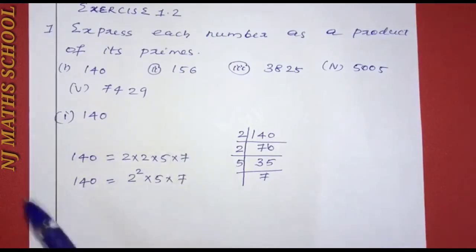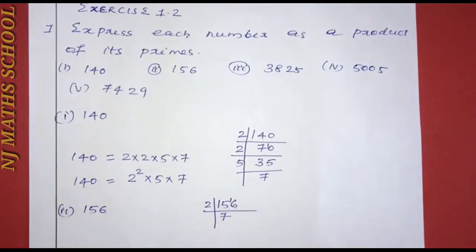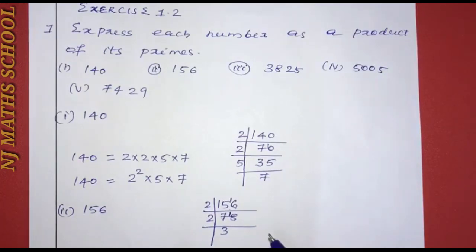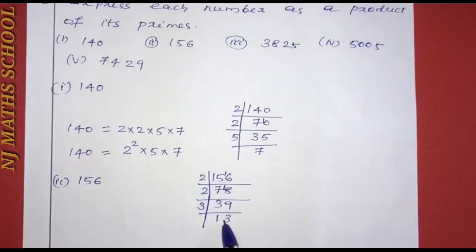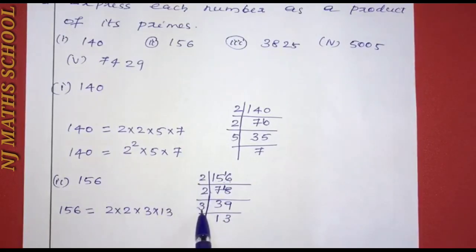The next number is 156. We need to factor 156. 156 is equal to 2 into 2 into 3 into 13. That is equal to 2 squared into 3 into 13.